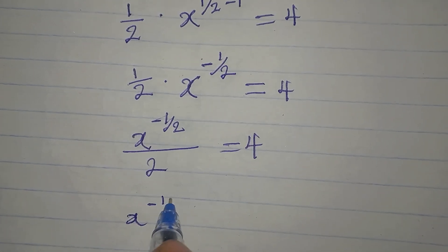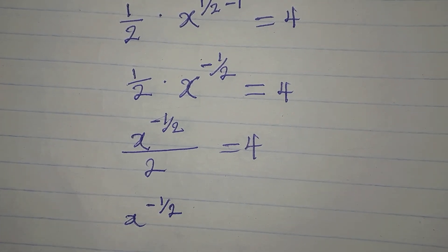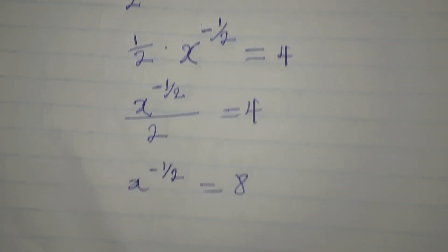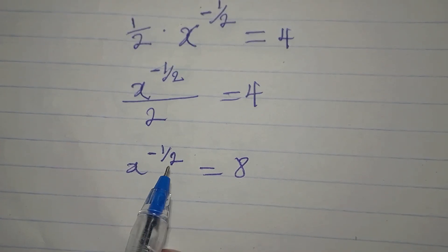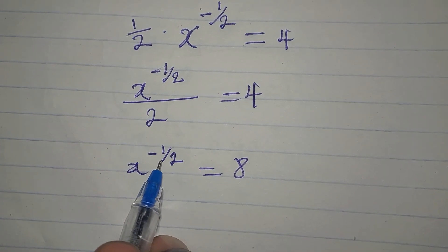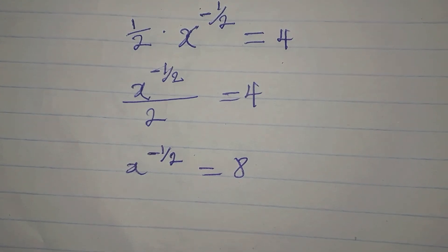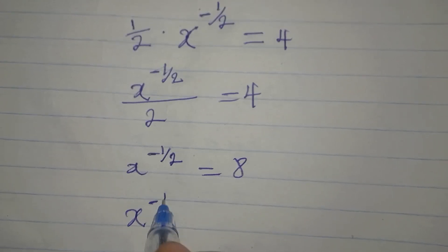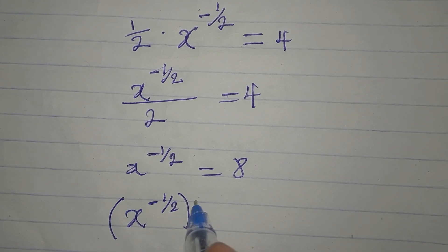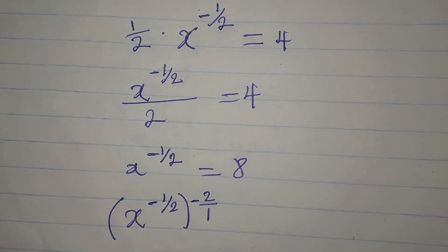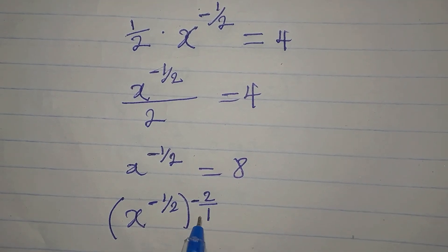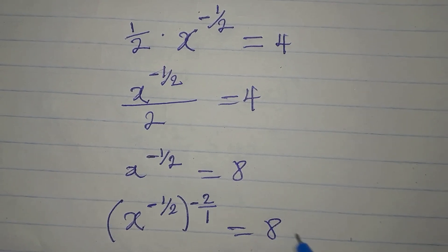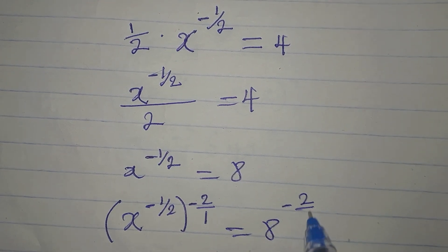So x to the power of negative 1 over 2 is equal to 8 if you cross multiply. How do I do away with this power here, negative 1 over 2? I'll multiply it by its reciprocal. So we have x to the power of negative 1 over 2 multiplied by negative 2 over 1. This will be equal to 8 to the power of negative 2 over 1.